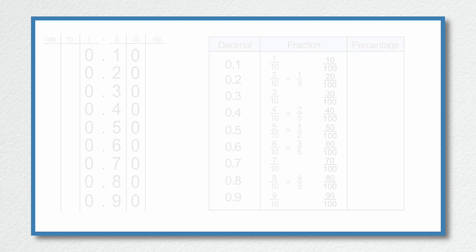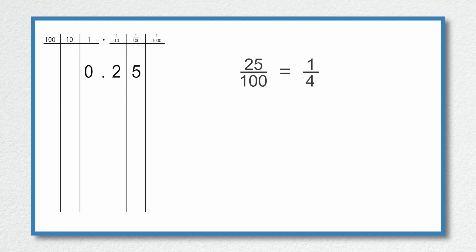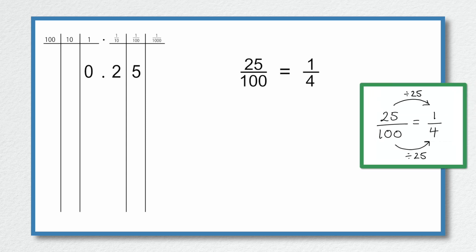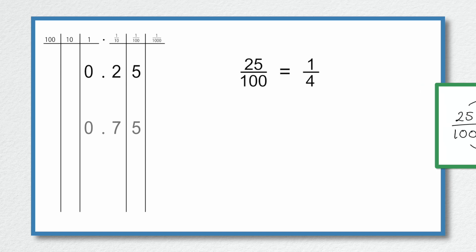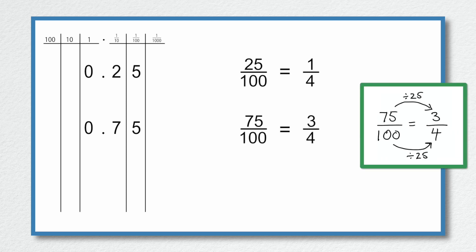As mentioned at the beginning, there are some values you need to be comfortable with without a calculator — you just need to know them, and that will come with practice. For example, 0.25 is 25 over 100, which can be simplified to 1 over 4, a quarter, by dividing the top and bottom by 25. So 25 over 100 is an equivalent fraction to a quarter, because the denominator is 4 times greater than the numerator. Similarly, 0.75 is 75 over 100, which simplifies to 3 quarters by dividing the top and bottom by 25.